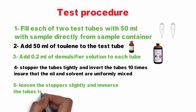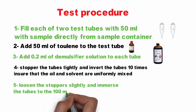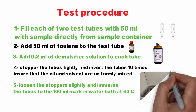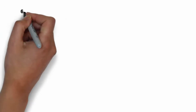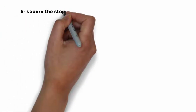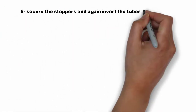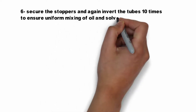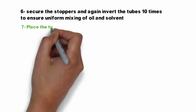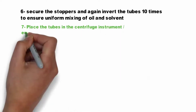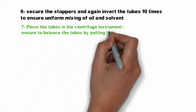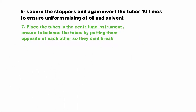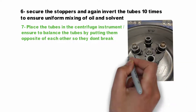Loosen the stopper slightly and immerse the tubes to the 100 ml mark in the water bath at 60 degrees. Then secure the stoppers and again invert the tubes 10 times to ensure uniform mixing of oil and solvent. Place the tubes in the centrifuge instrument, ensuring to balance the tubes by putting them opposite each other so they don't break.